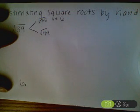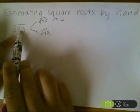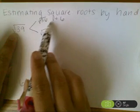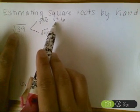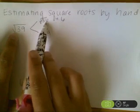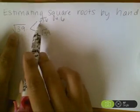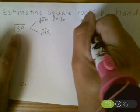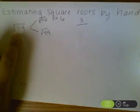The next thing that you do is you see how far your original number, 39, is away from the smaller square root. So the smaller square root is 36, 39 is three values away from that. So you're going to write a fraction with three on top.